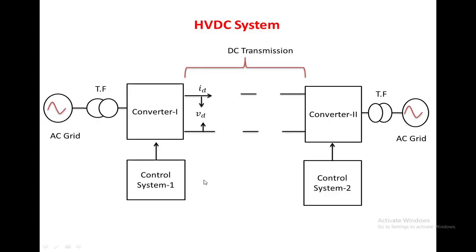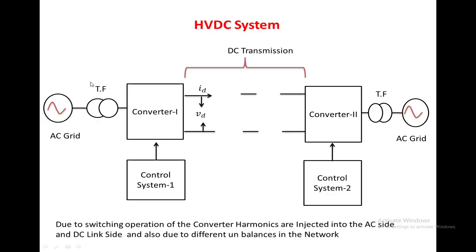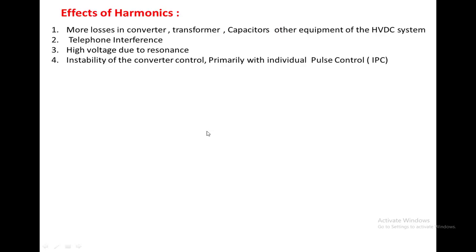Our topic here is harmonics. Harmonics are induced into both the AC side and the DC side due to converter operation, imbalance in AC voltage, imbalance in the AC network, and changes in DC current. Because of harmonics, losses in the converter transformer and capacitors connected in the HVDC system increase. Telephonic interference is also present due to harmonics. Harmonics cause changes in AC frequency, creating a possibility of resonance.